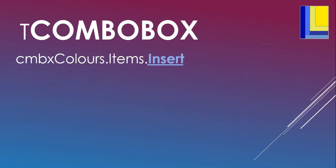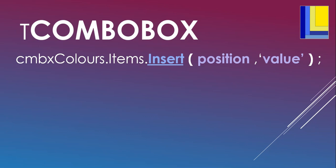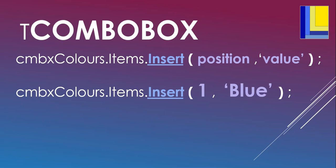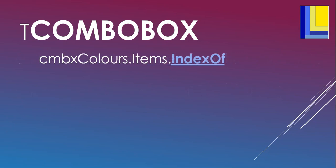If you want to insert into a combo box at a particular position, use .items.insert. You give it a number and the value you want to insert. For example, insert at position 1 with value 'blue' — that'll be inserted at the second place, because remember zero is the first position.